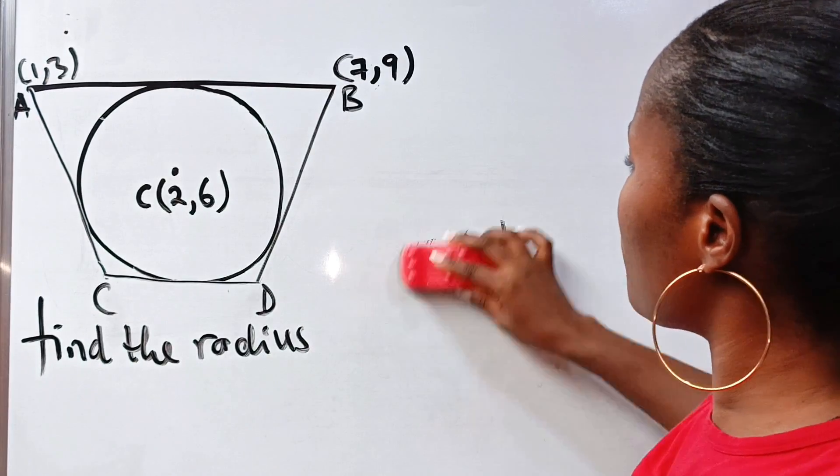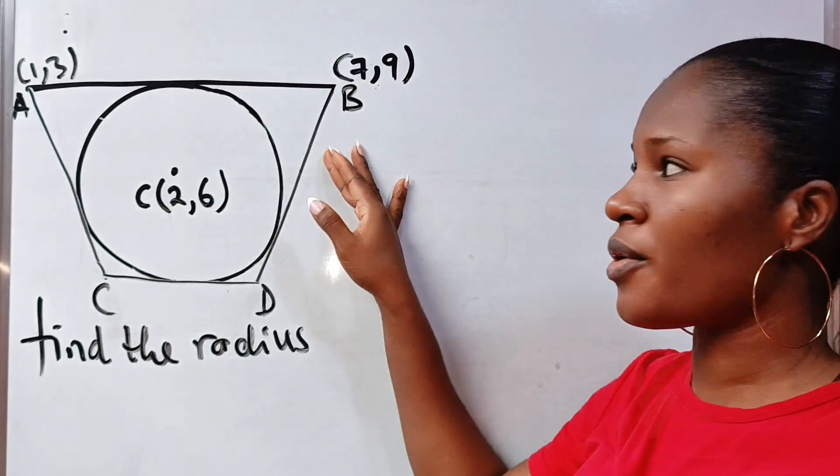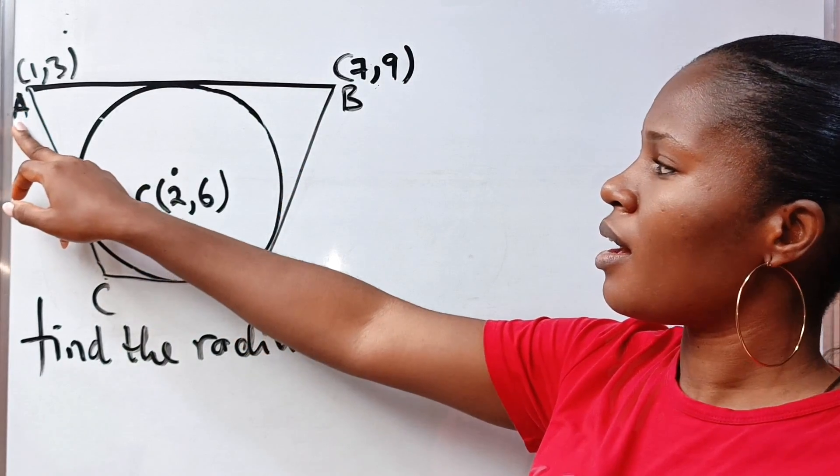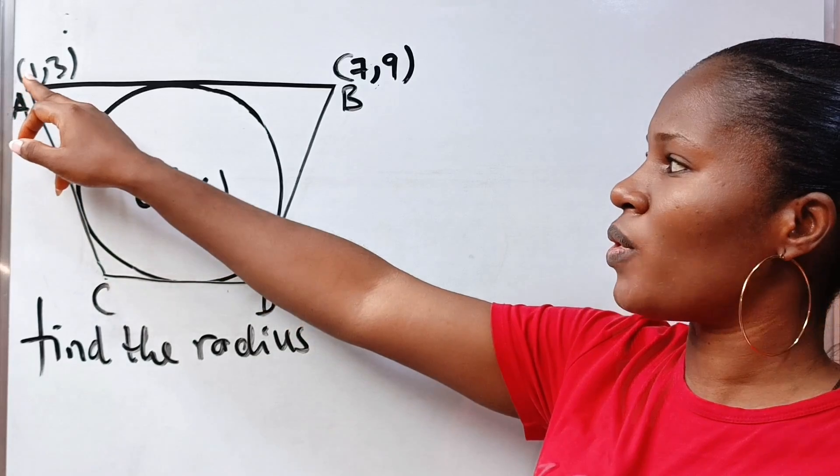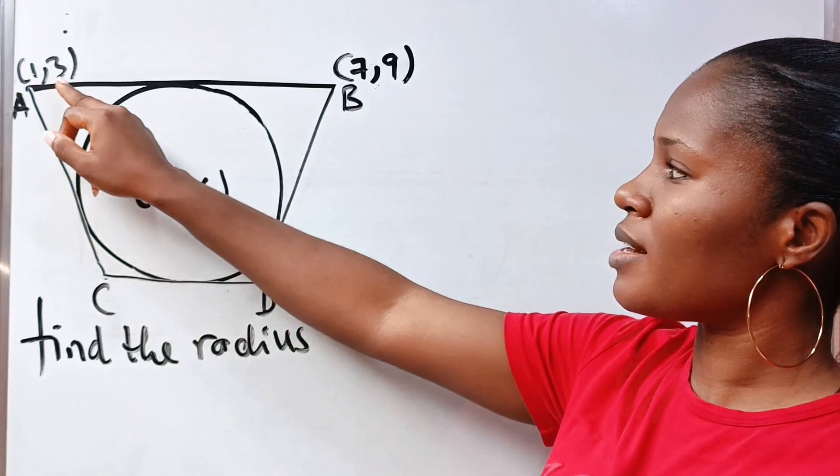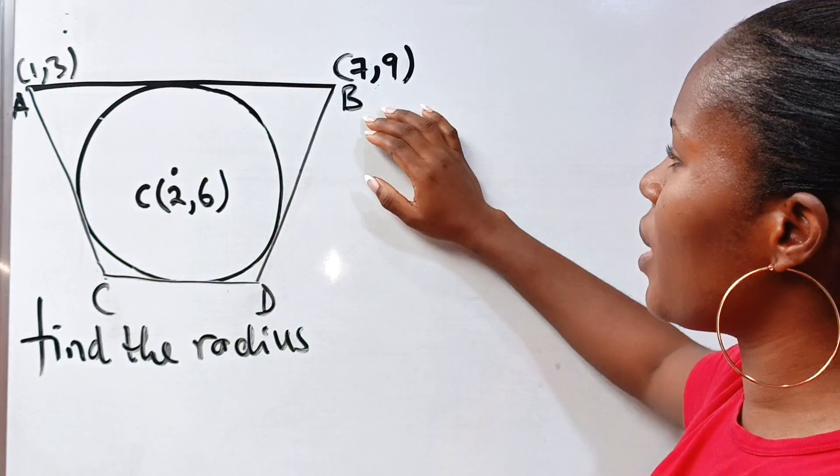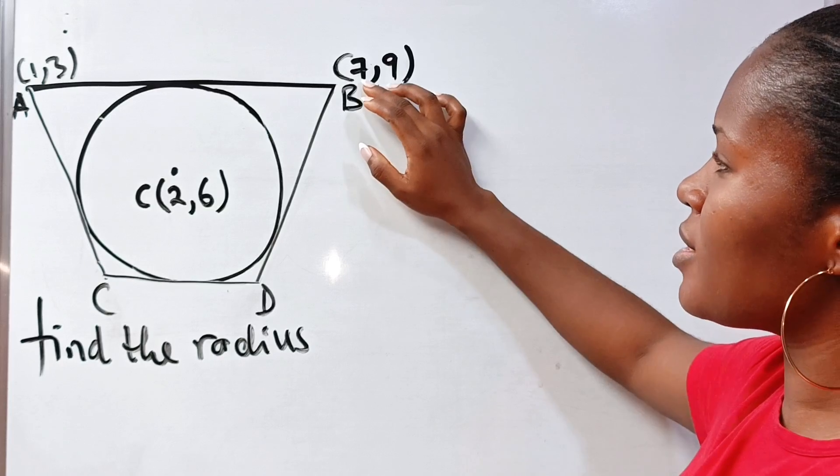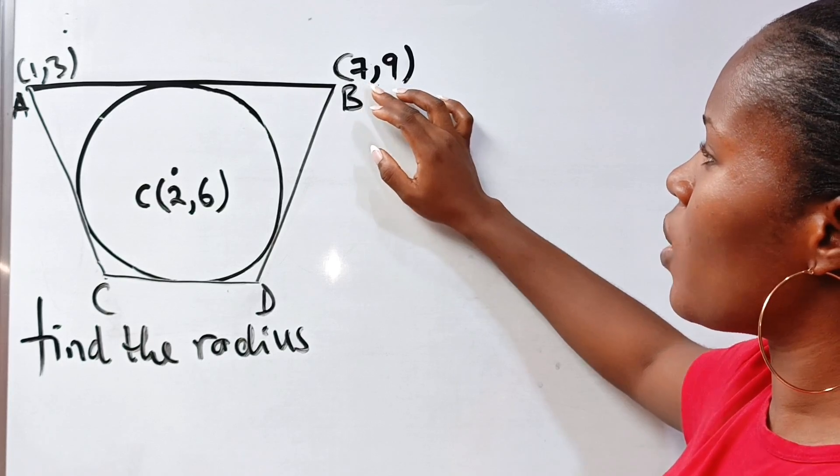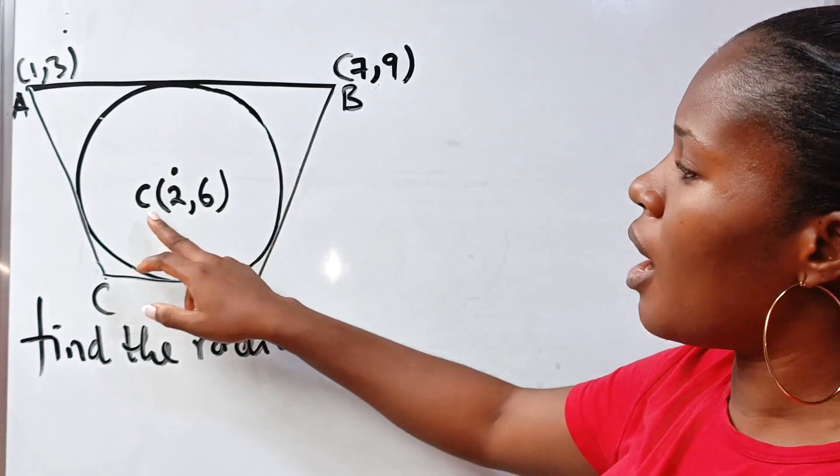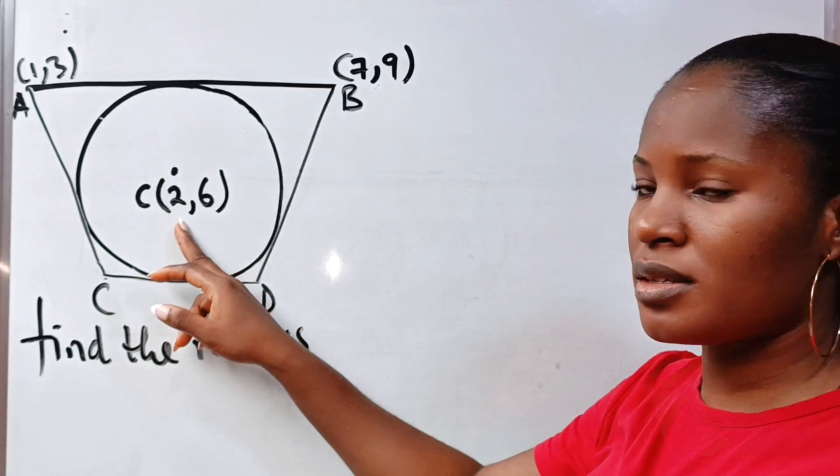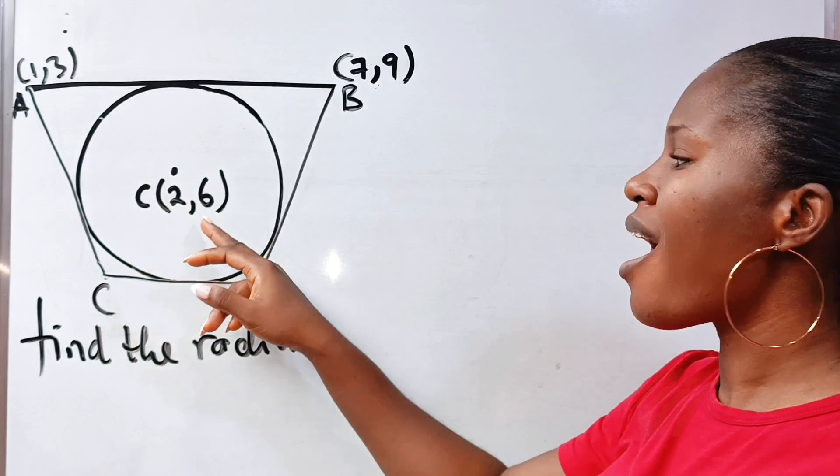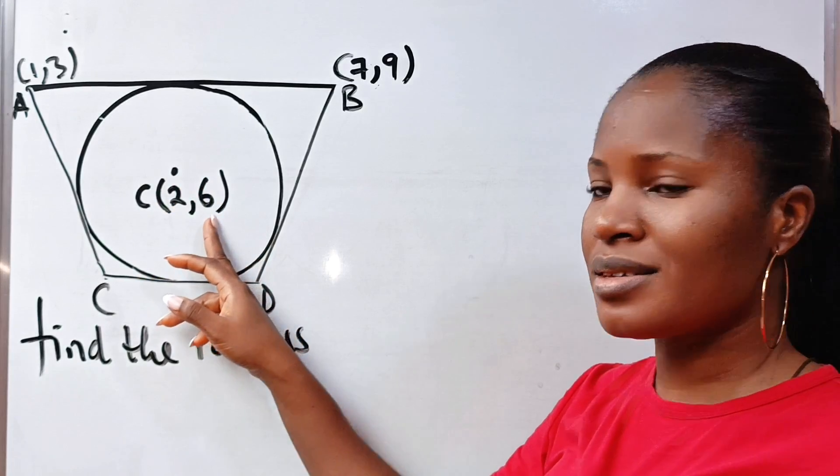Alright, so we are given different points on the quadrilateral. Point A has x-coordinate as 1 and its y-coordinate as 3. Point B has its x-coordinate as 7 and its y-coordinate as 9. Now point C has its x-coordinate as 2, being the center of the circle, and its y-coordinate as 6.